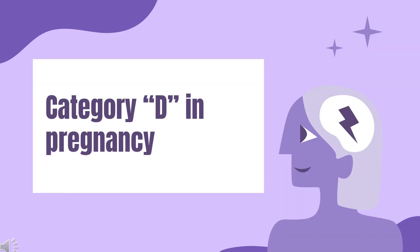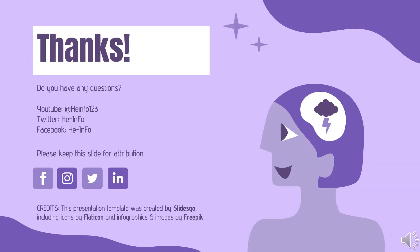Safety Advice: A teratogen is anything known to cause birth defects during development of an embryo or fetus. Valproic acid products are assigned to pregnancy Category D. That's all the information about valproic acid we collected. Thanks for listening. Don't forget to like, share, and subscribe to the HeInfo channel for more health information.